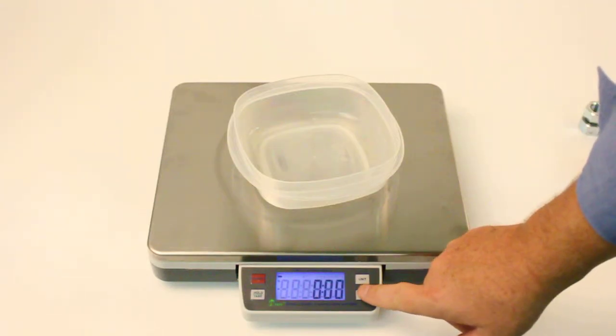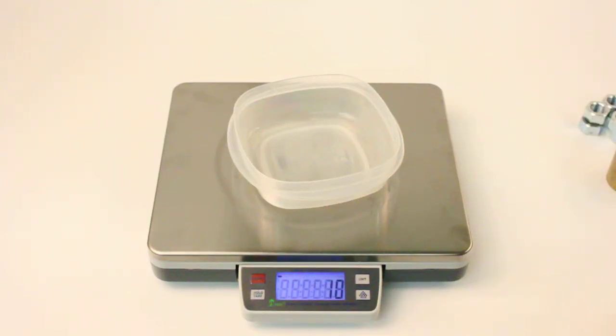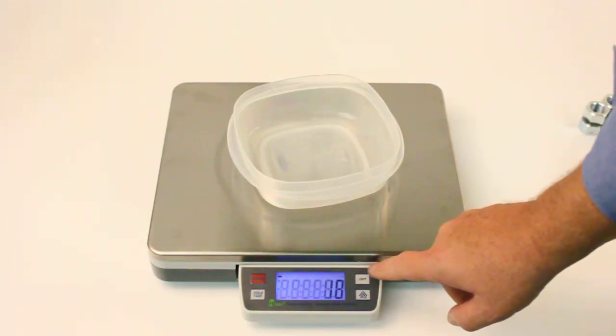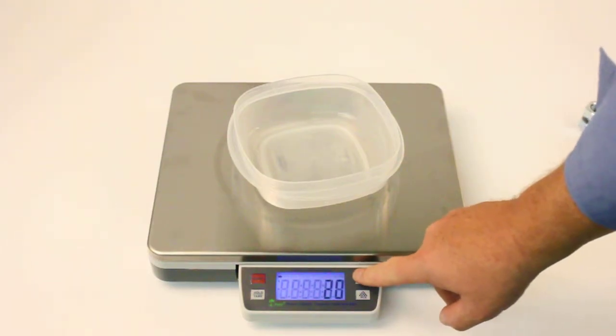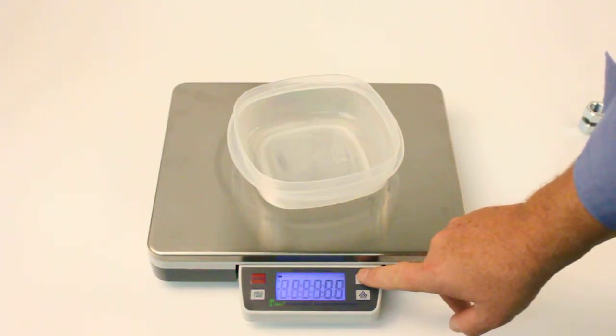Then we press the pieces button and hold it until the reference weights appear. We can toggle between 10, 20, 25, 50, 75, and 100. In this case we will choose 10.